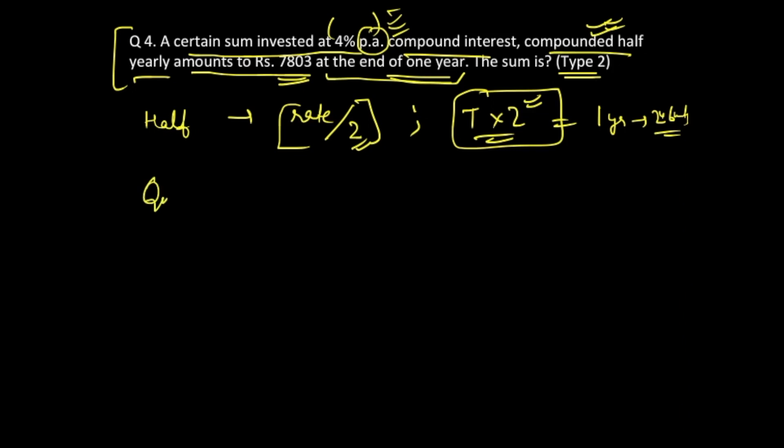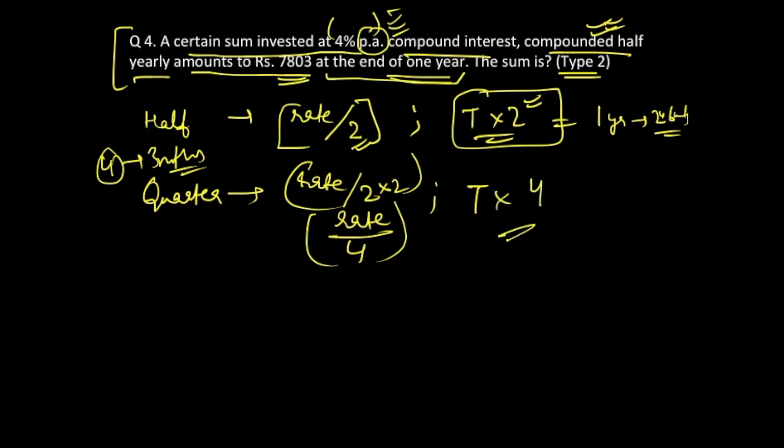Similarly, one more thing that you must remember is that for a quarterly process, in a year we have four quarters each of three months. For quarterly we are doing the same process, but instead of dividing by 2, you are going to divide the rate by 4. So rate is actually being divided by 4, and for time period you are going to multiply it by 4.